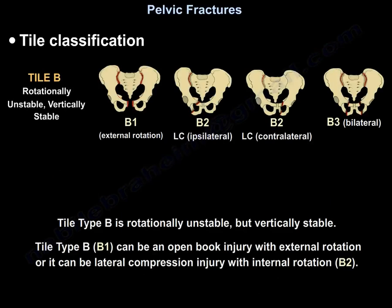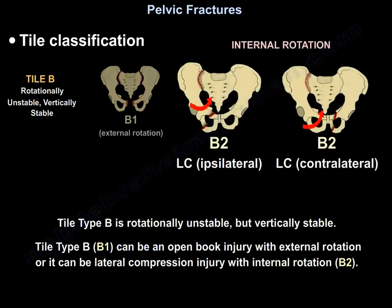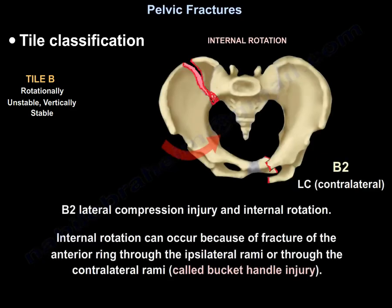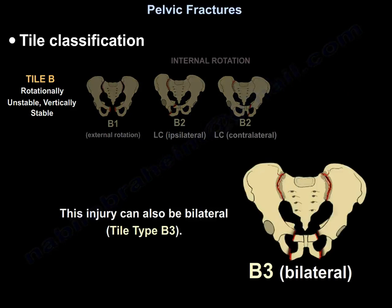Type B is rotationally unstable but vertically stable. Type B can be an open book injury with external rotation, or it can be a lateral compression injury with internal rotation. B2 is a lateral compression injury with internal rotation, which can occur because of fracture of the anterior ring through the ipsilateral rami or through the contralateral rami - that's called a bucket handle injury. This injury can also be bilateral.